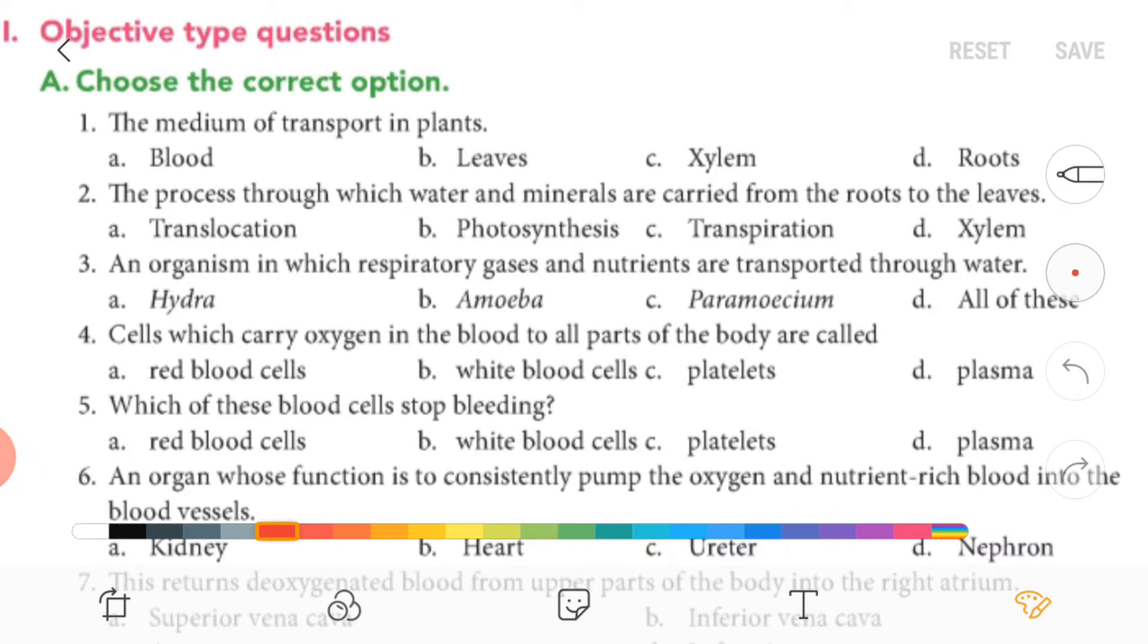Hello guys, standard 7 chapter number 10, transport of substances in plants and animals. Today we are going to solve the exercise in your textbook. First of all, MCQs. Number one, the medium of transport in plants—it is xylem.